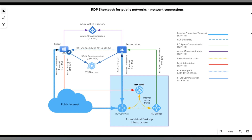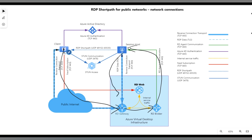Now let's talk about RDP Short Path. With RDP Short Path for public network enabled, the client still makes an initial connection to the AVD gateway to launch the VDI. The AVD gateway forwards the request to the AVD broker to check available session hosts. Once the session host is identified, instead of going through the AVD gateway, it directly connects to the client using UDP ports — skipping that hop entirely.